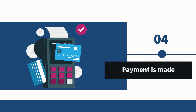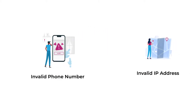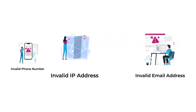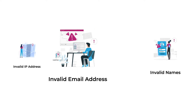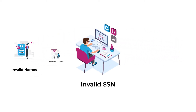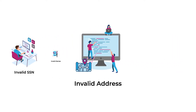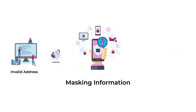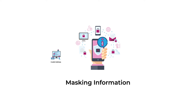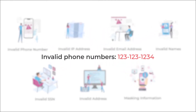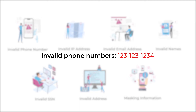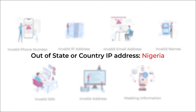Here are some examples of fraud patterns we've encountered across this claims process. Perhaps we capture an invalid phone number or IP address. The email address doesn't quite check out, or the first and last name can't be found in another database. Perhaps the social security number is invalid or doesn't match the person's name, or perhaps some information is masked. Invalid phone numbers like 123-123-1234 — that can't be right. Out-of-country or out-of-state IP addresses will automatically be flagged.